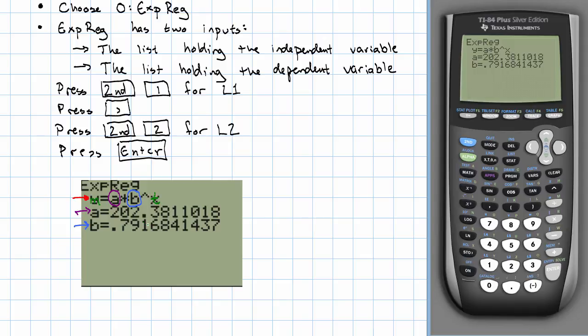My equation is M equals this number A that I see, which is about 202, times this number B, which is about 0.792, to the T-th power. This equation is the best-fitting exponential equation for these numbers.